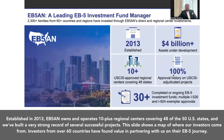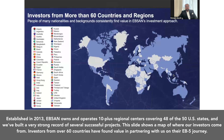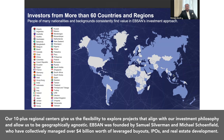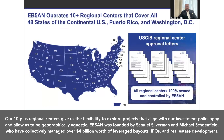Established in 2013, EB5AN owns and operates 10-plus regional centers covering 48 of the 50 US states, and we've built a very strong record of several successful projects. This slide shows a map of where our investors come from — investors from over 60 countries have found value in partnering with us. Our 10-plus regional centers gives us the flexibility to explore projects that align with our investment philosophy and allows us to be geographically agnostic.